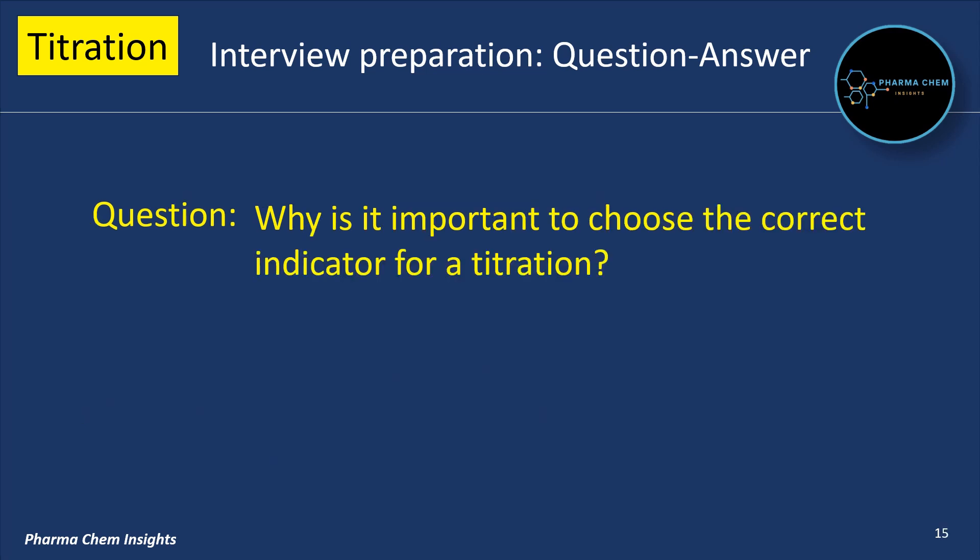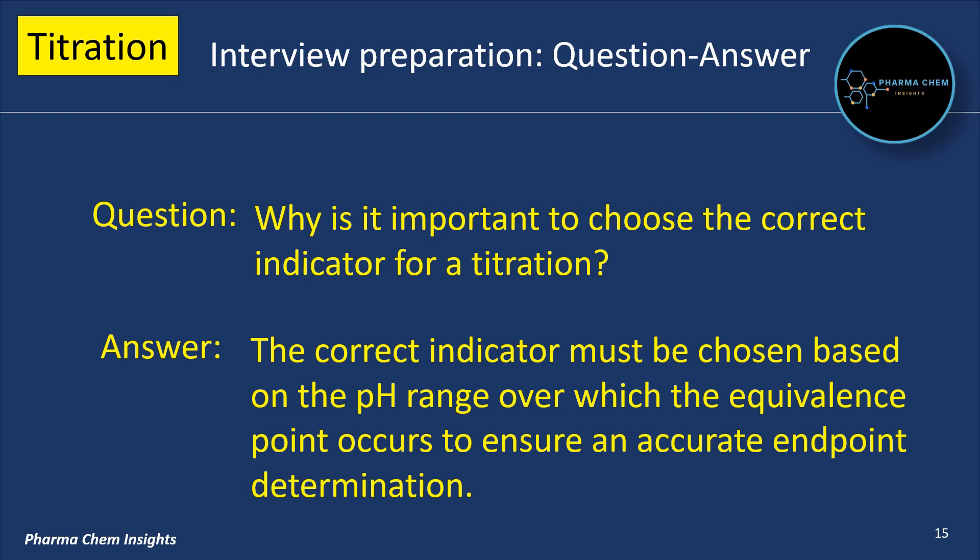Why is it important to choose the correct indicator for a titration? The correct indicator must be chosen based on the pH range over which the equivalence point occurs, to ensure an accurate endpoint determination.